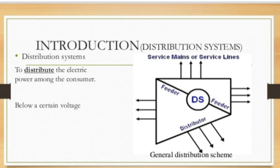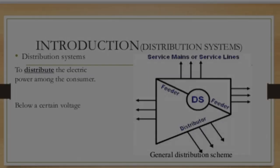A distributor is a conductor which taps electrical energy for different consumers; therefore voltage is the main concentration for a distributor. From the distributor, all the service mains or service lines are taken for different homes for the utilization of electrical energy.